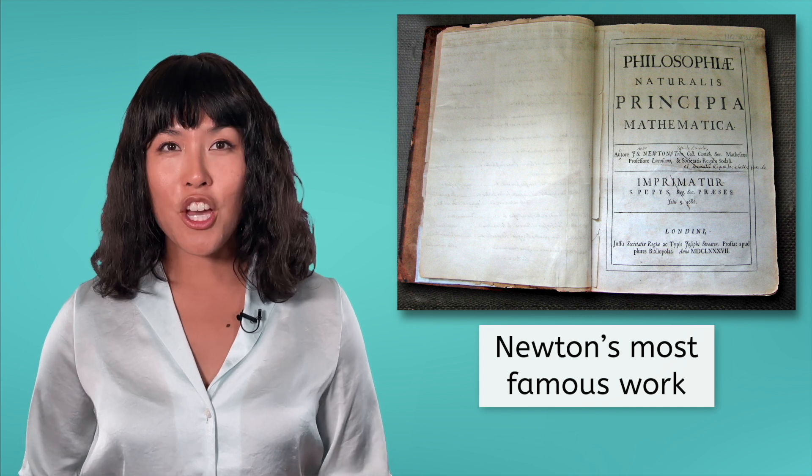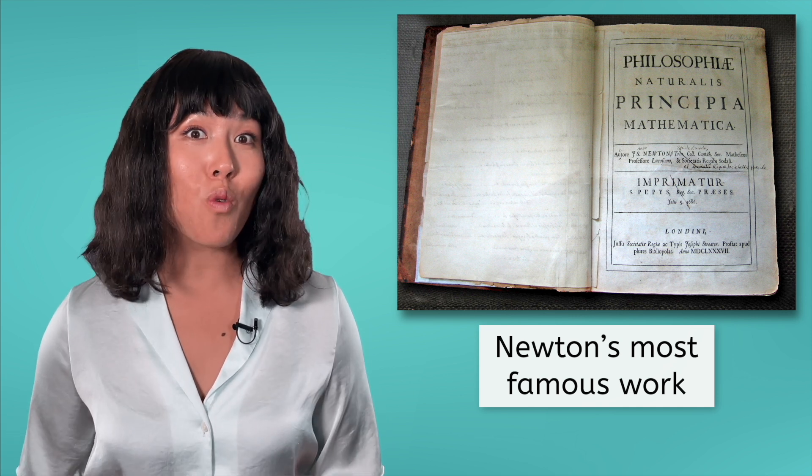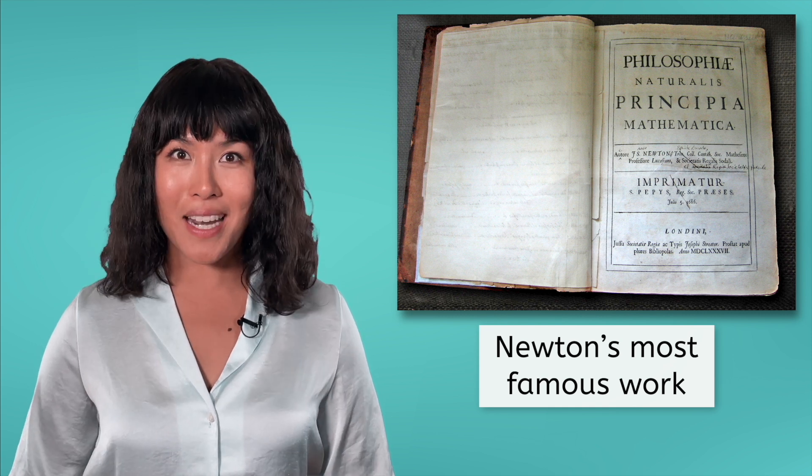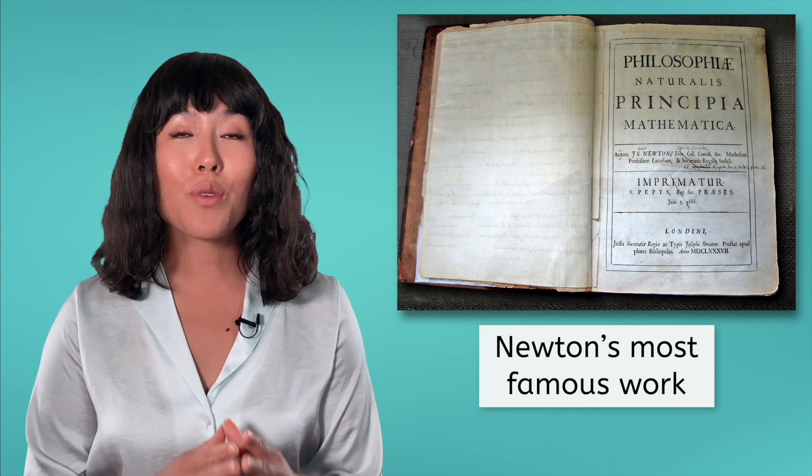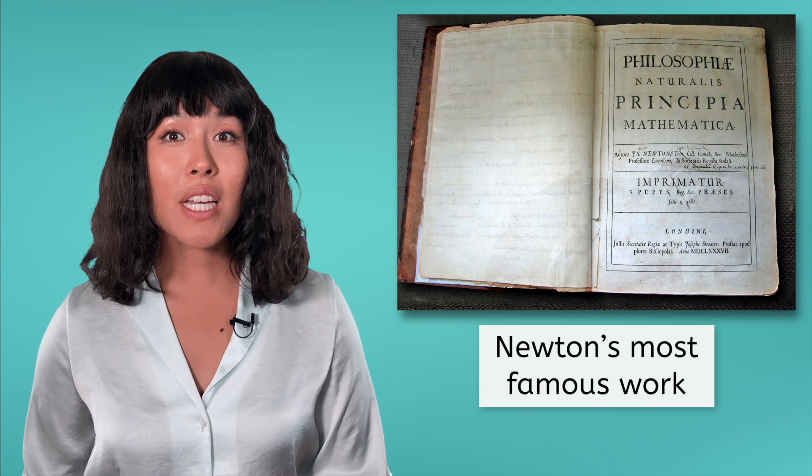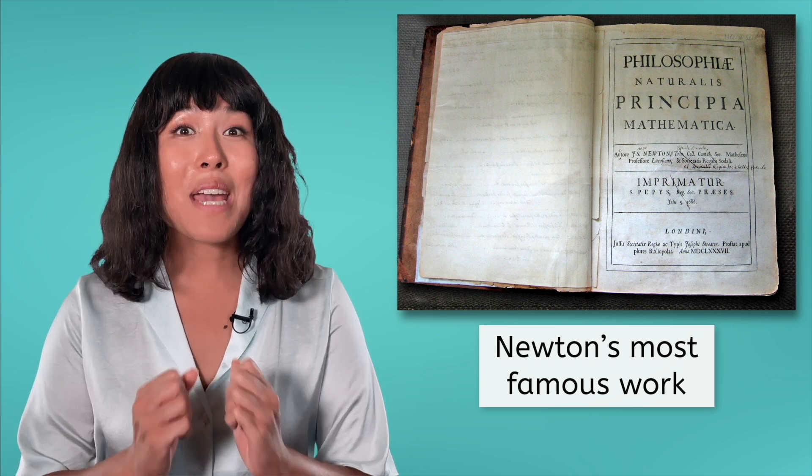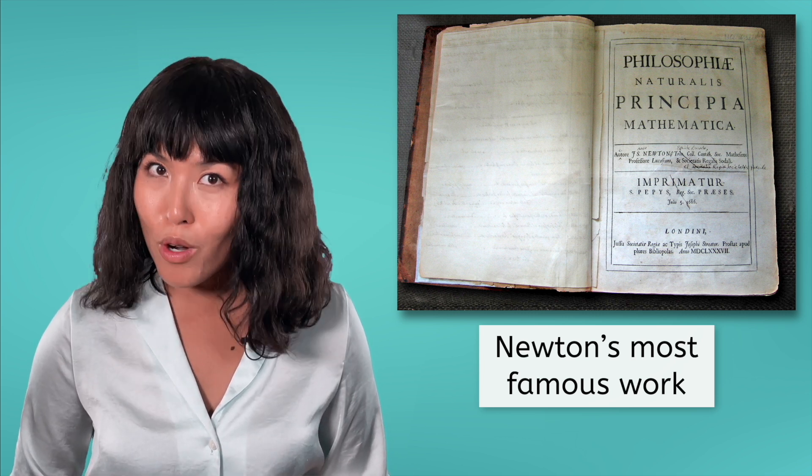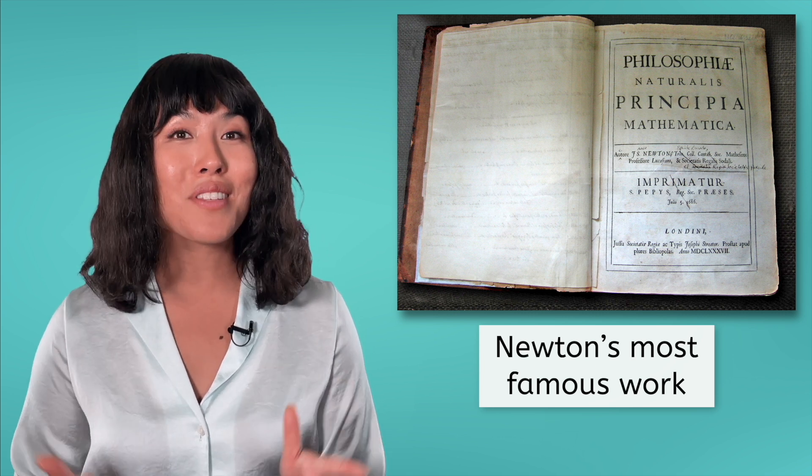In 1687, Newton published his most famous work, the Philosophiae Naturalis Principia Mathematica, which described his three laws of motion and his theory of universal gravitation. The book was a monumental achievement and is considered to be one of the most important works in the history of science.